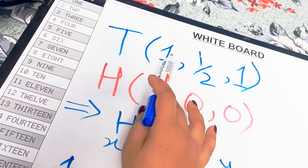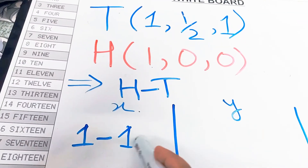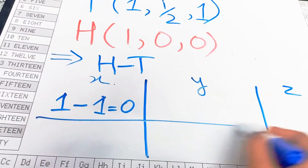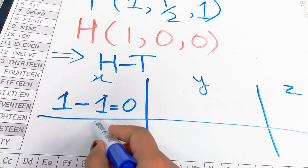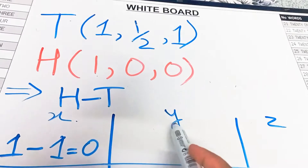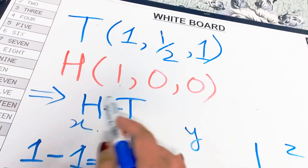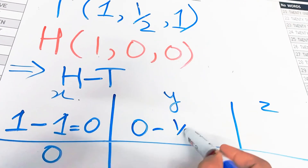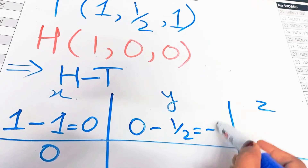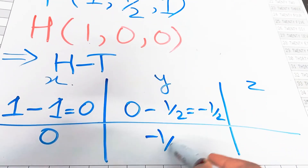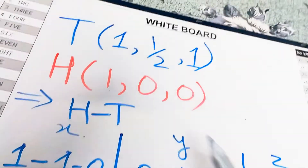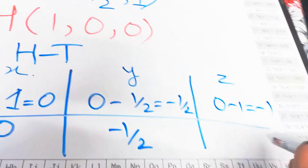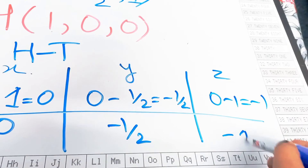Performing the subtractions: for x it's 1 minus 1 = 0. For y it's 0 minus 1/2 = −1/2. For z it's 0 minus 1 = −1. So after subtraction we get 0, −1/2, and −1.